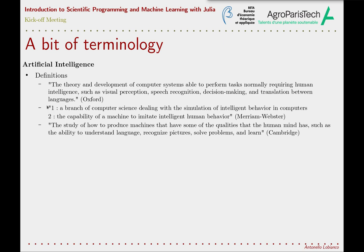From the Merriam-Webster Dictionary, artificial intelligence is either a branch of computer science dealing with the simulation of intelligent behaviors in computers, or the capacity of machines to imitate intelligent human behaviors. For Cambridge, it is the study of how to produce machines that have some of the qualities that the human mind has.